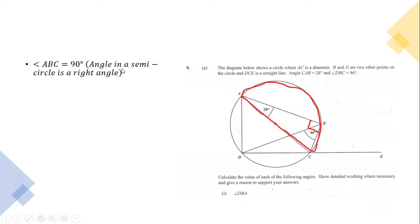Since angle ABC is equal to 90 degrees — the angle in a semicircle — angle DBA, which is the portion we're trying to find, would be 90 degrees minus 46 degrees. We already know that 46 degrees is a portion of that 90 degrees. So 90 minus 46 gives us angle DBA equal to 44 degrees.